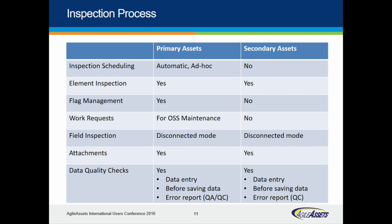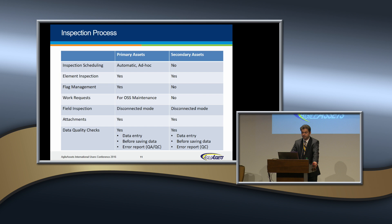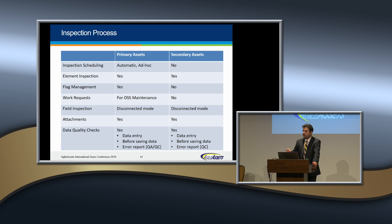Inspection scheduling is automatic for primary assets but on demand for secondary assets. Element inspection is required for both. Flag management, which Steve will talk about, is supported in primary assets but not needed for secondary assets. Work requests are only for overhead sign structure management. Some functionalities are specific to one structure type, even though all structure types are handled within one module. Both primary and secondary assets support disconnected field data collection, attachments, and data quality checks.